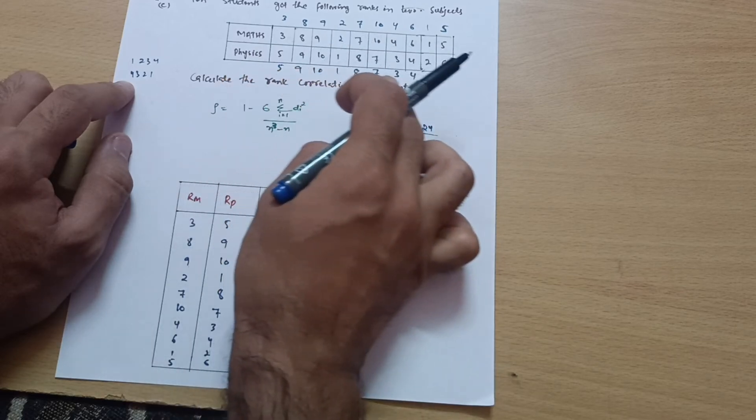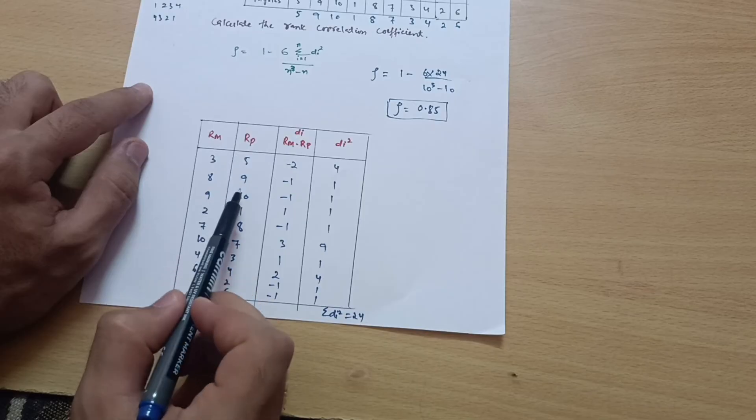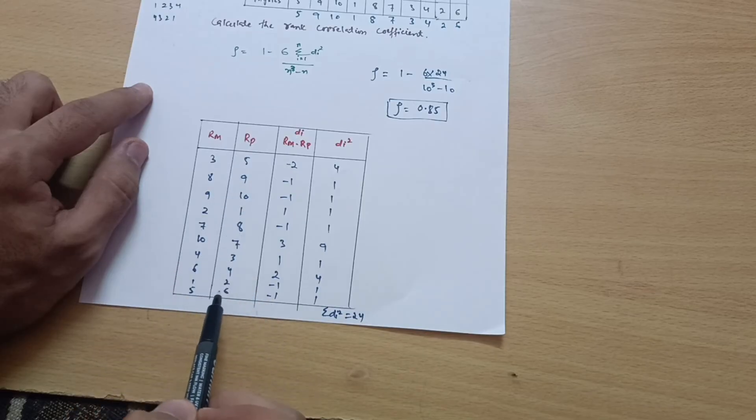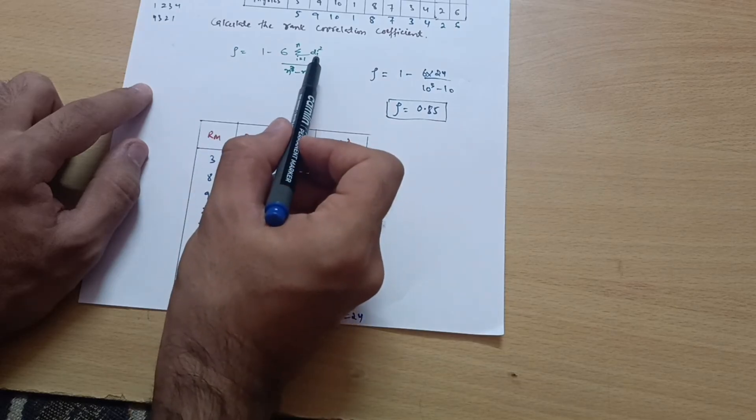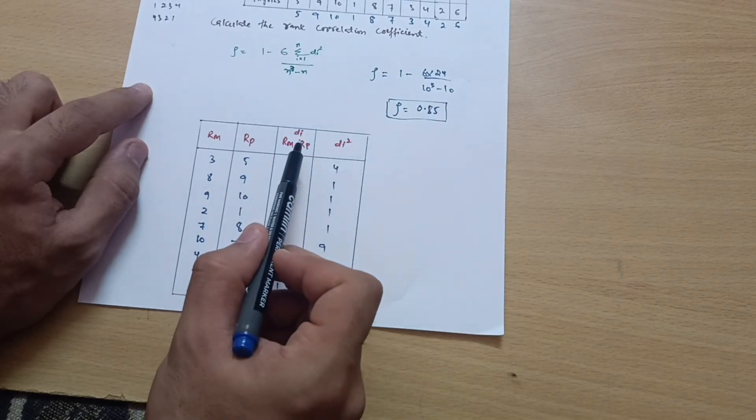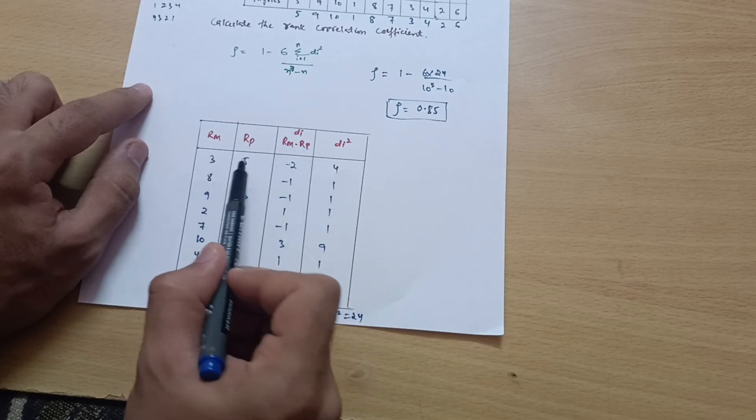Then take down these ranks in this particular order: 5, 9, 10, 1, 8, 7. Write down in the Rp column: 5, 9, 10, 1, 8, 7, 3, 4, 2, 6. Then take the difference di as we need di squared. First we will calculate di value.